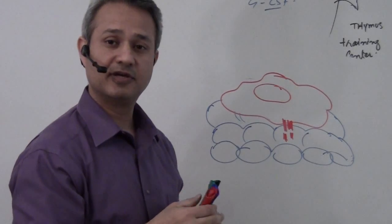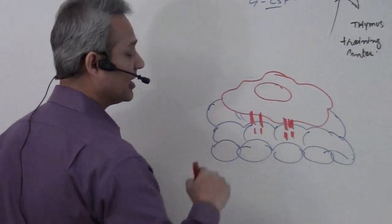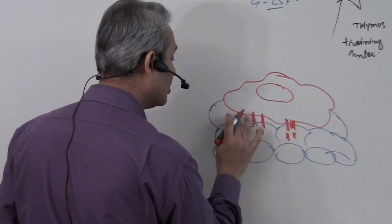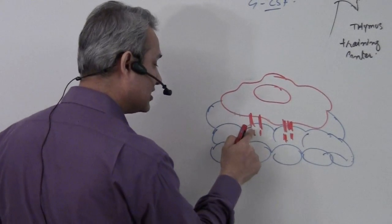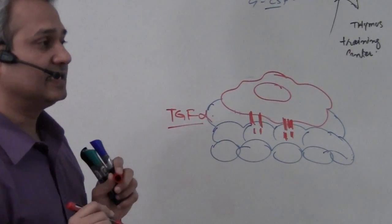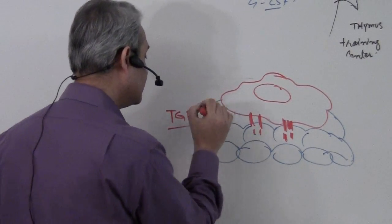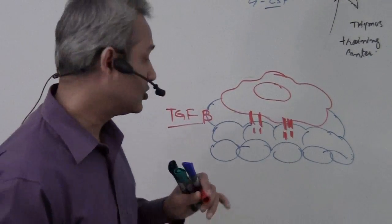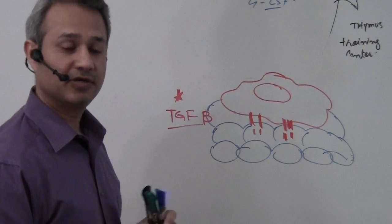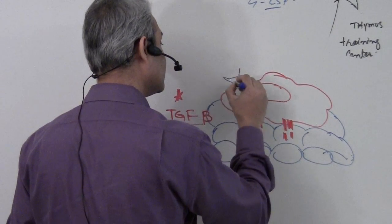Now here's the interesting part. Once the macrophages have attached to the tissue using integrins, those integrins — just by their presence, since they are chemical substances — cause tumor growth factor beta, TGF-beta, to become activated. So TGF-beta becomes active when the integrins are present.